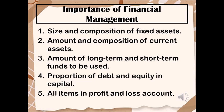Number 3: Amount of long-term and short-term funds to be used. Financial management determines the quantum of funds to be raised for the short-term and long-term. In case a firm requires more liquid assets, it will prefer to have more long-term finance, even though profits will decrease due to payment of more interest compared to short-term debt. Number 4: Proportion of debt and equity in capital. Financial management also takes decisions regarding the proportion of debt and equity. Number 5: All items in the profit and loss accounts are affected by financial management decisions. For example, a higher amount of debt will lead to an increase in expense in the form of interest payments in the future.